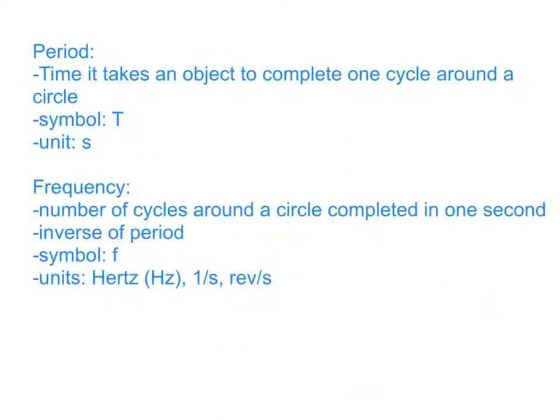We have two terms dealing with time when it comes to circles. The first is period — the time it takes an object to complete one cycle, revolution, or rotation; any time an object takes to go around a circle once. The symbol for period is a capital T. In circular motion problems, instead of using a lowercase t for time, we use capital T. The unit for period is seconds.